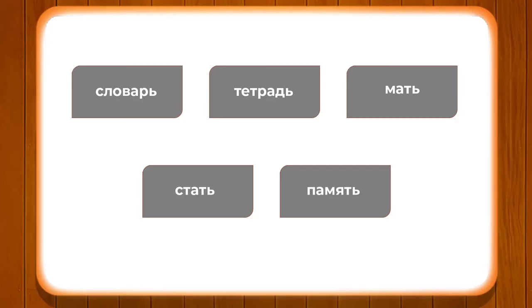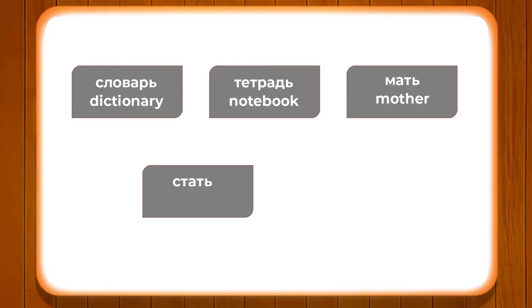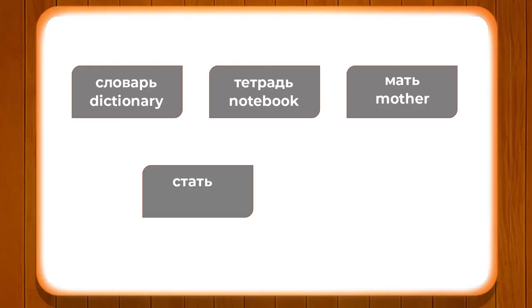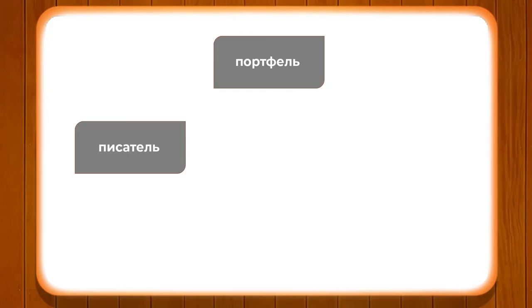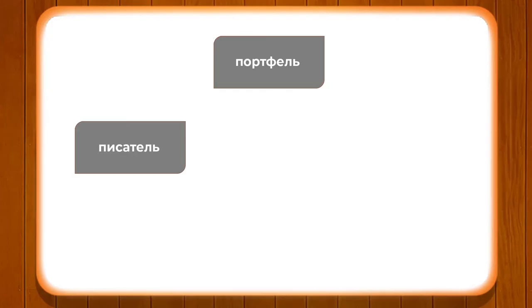Let's look at certain words: SLOVAR, TETRAD, MACH, STATYA, and PAMYATNIK. SLOVAR means dictionary, TETRAD means notebook, MACH means ball, STATYA means article, and PAMYATNIK means monument or memorial.